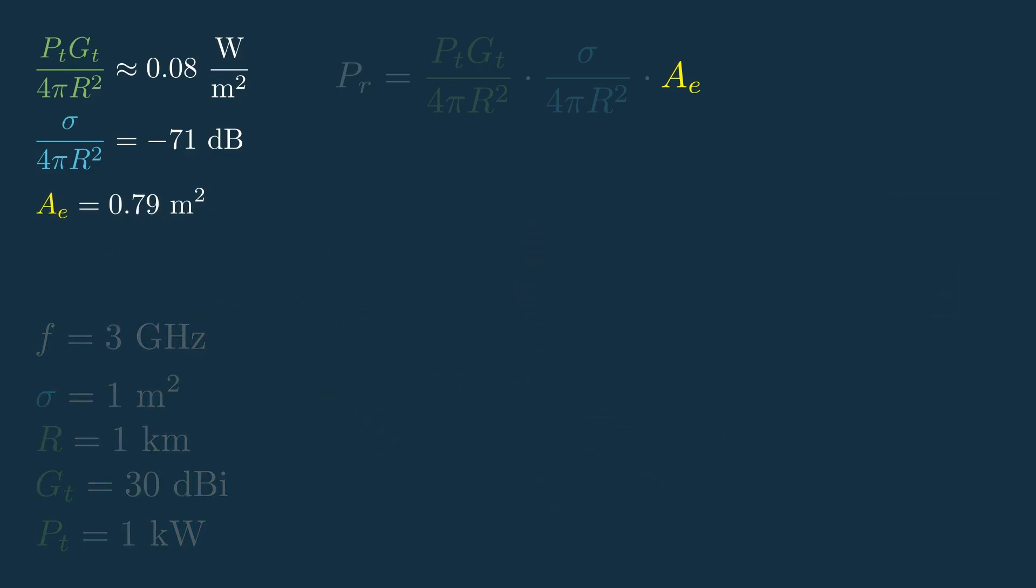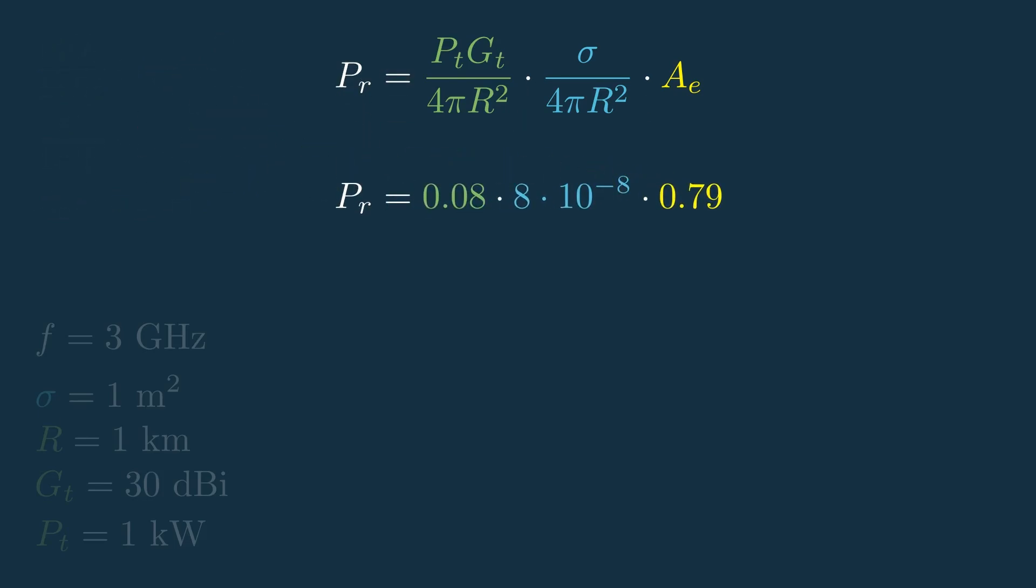So now we have the numbers for all three components. To plug these back into our equation, let's first get them all back into linear units. So, for a radar transmitting 1 kW of power, at a frequency of 3 GHz, through an antenna with a gain of 30 dBi, and you're looking at a 1 m² target 1 km away, we would receive negative 83 dBw back, or negative 83 dB relative to 1 watt which equals 5 times 10 to the negative 9th watts, which is a super tiny amount.